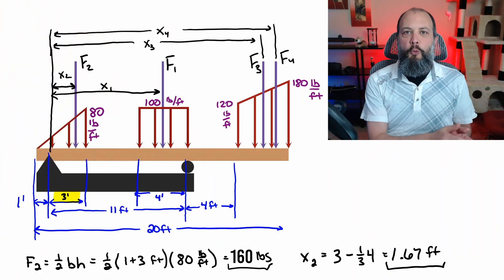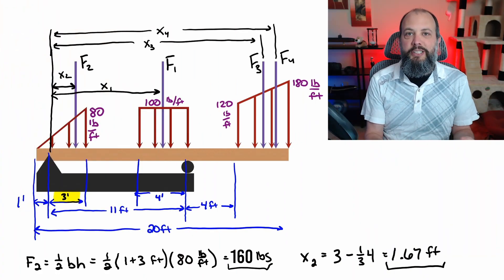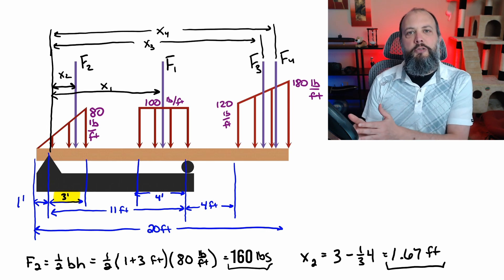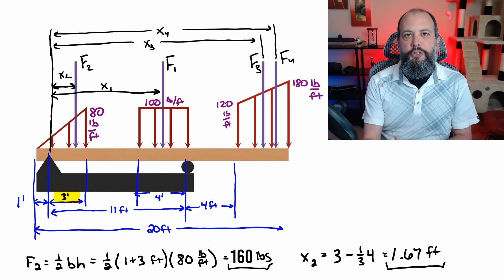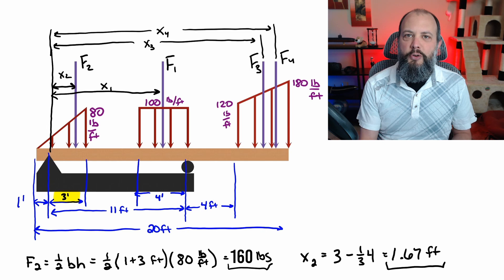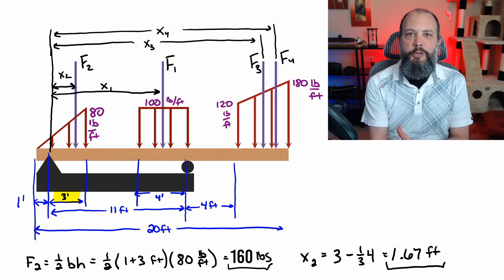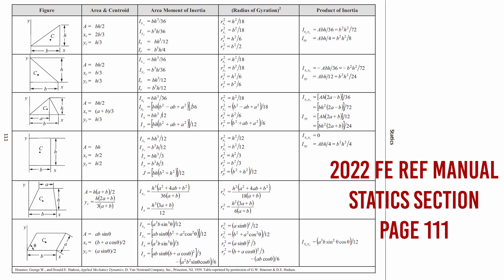The centroid of a rectangle was one-half of the base because the centroid is directly in the middle. But a triangle centroid is going to be skewed. It's going to be closer to the tall side of the triangle. And even though we haven't covered centroids yet, you can look up the centroid of a triangle in a table in the back of your textbook or in a table in the FE reference exam manual.